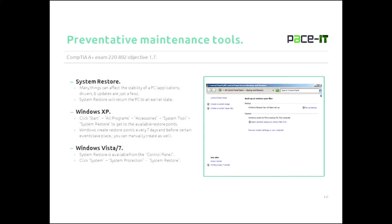In Windows XP, you get there by clicking Start, going to All Programs, clicking Accessories, System Tools, and then System Restore — that gets you to your available restore points. Starting in Windows XP, Windows created automatic restore points every seven days, and also created restore points after certain events, in particular Windows Update, so you can get the system back to the point it was before the update occurred.